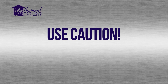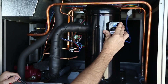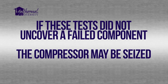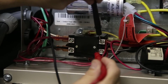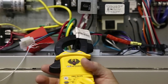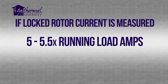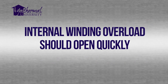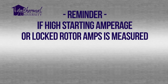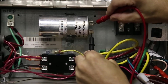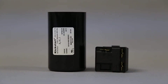If all these tests did not uncover a failed component, the compressor may be seized or locked up. If all the components have been tested electrically and visually, attach an amp meter, reapply power, and start the unit. If locked rotor current — usually 5 to 5.5 times running load amps — is measured and the compressor does not start, the compressor is probably seized or locked up. The internal winding overload should open very quickly. If high starting amperage or locked rotor amps is measured, failed start components will give the appearance of a locked or seized compressor. Double check the run capacitor and any start components before replacing the compressor.